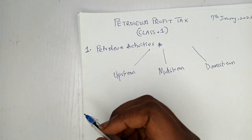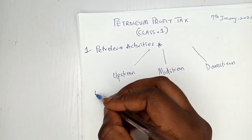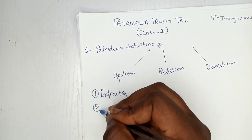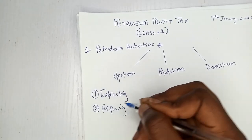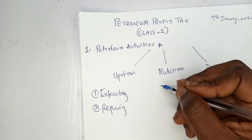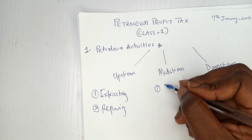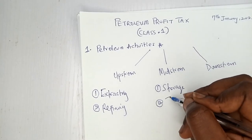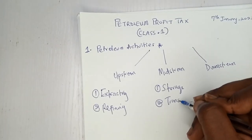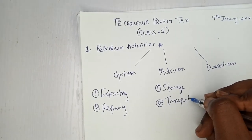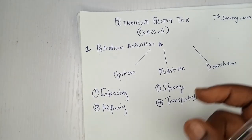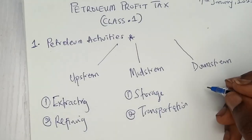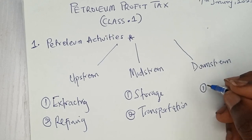Under Upstream Activities, we have extracting and refining. Under Midstream Activities, we have storage and transportation of crude oil — because the fact that you can extract does not mean you can store. Under Downstream, we have sales.